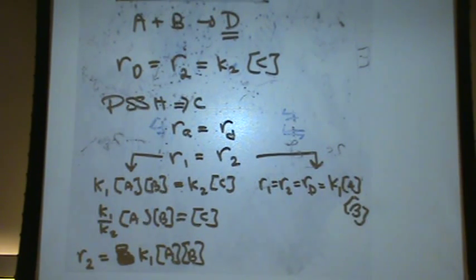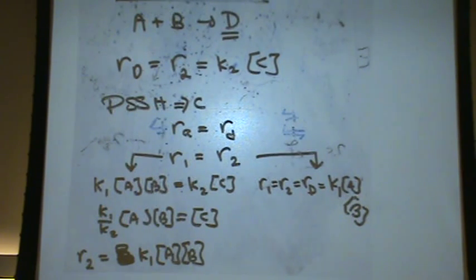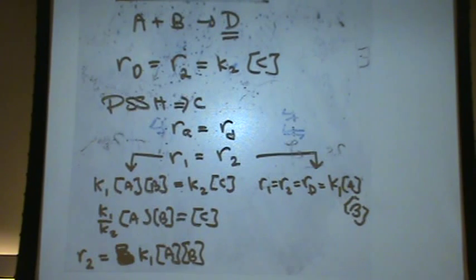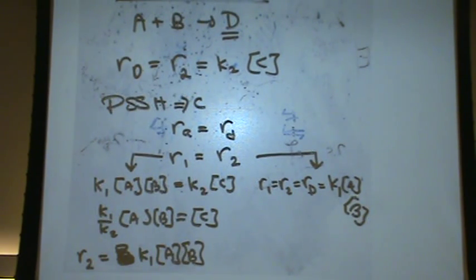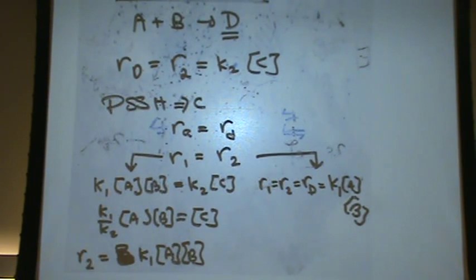Question: How do you know which step is slow and which is fast? You have no idea, because it wasn't labeled. If it is labeled, you're going to solve for the rate of the step that is slow.